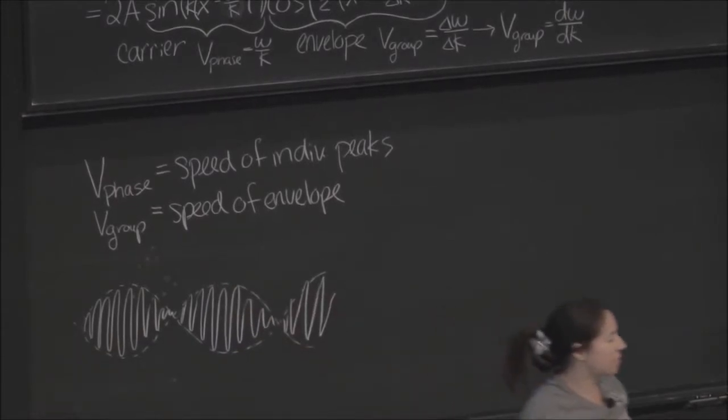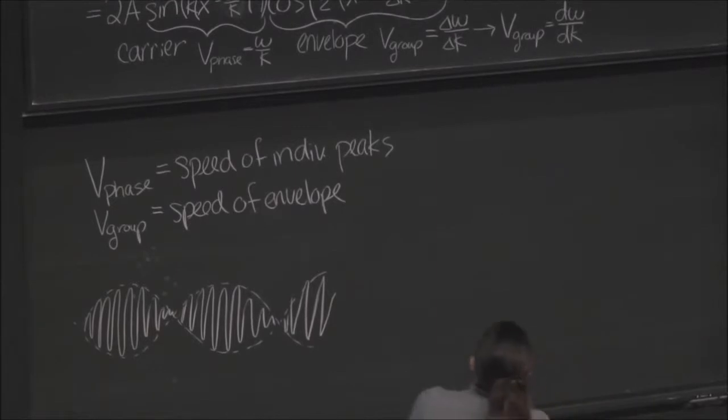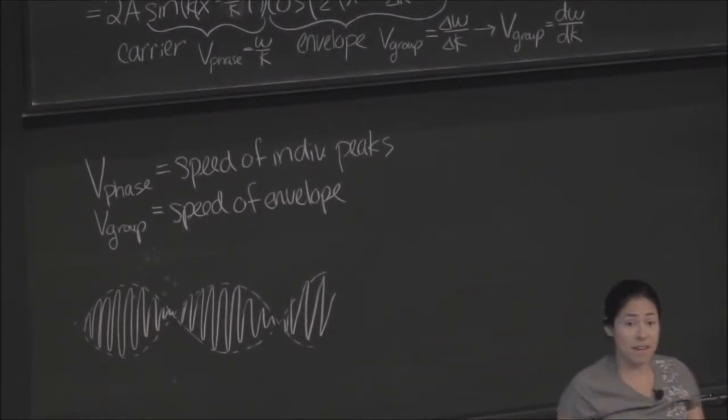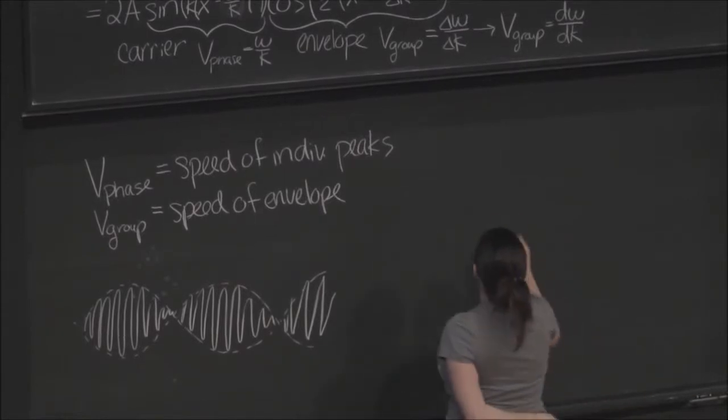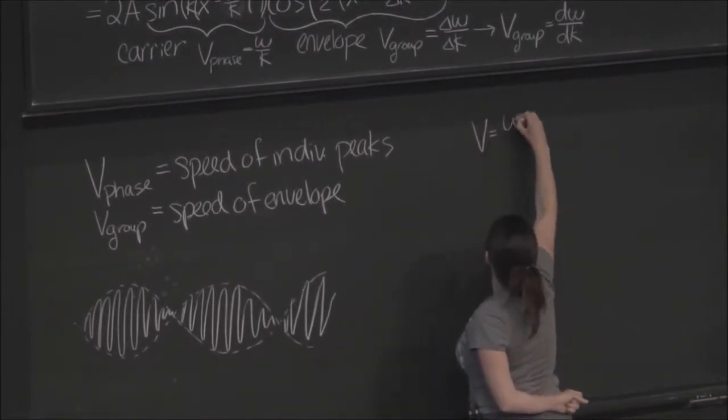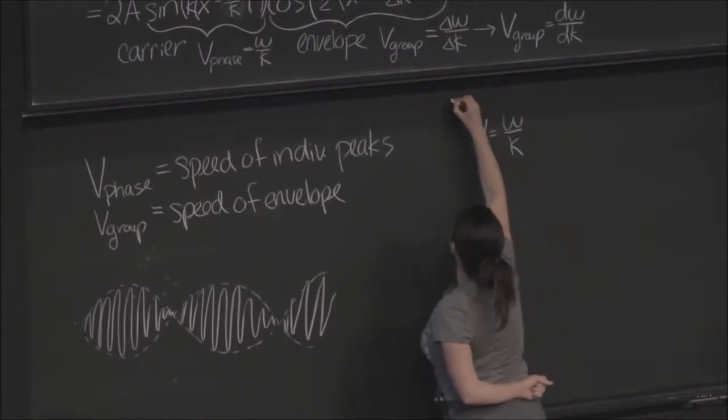So you might be wondering, when are these ever going to be different? Well, for most of the waves we've been doing, we've had just single velocity waves, where we've written down the nice equation that v equals omega over k. This is perfect.